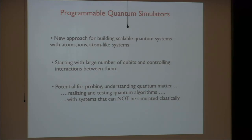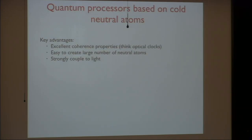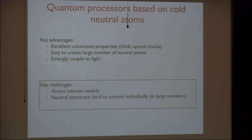What's actually most important is that we can really do it already now with system sizes which cannot be simulated classically, at least not easily. I'd like to focus on the approach involving cold neutral atoms. Those systems have been known to the community for a while. They have a number of key advantages: excellent coherence properties — think about the most advanced optical clocks — and it is also fairly easy to create a large number of neutral atoms. However, those systems have some disadvantages which so far prevented them from being really deployed in quantum information. Neutral atoms generally interact weakly, and also neutral atoms are very hard to control individually, at least in large numbers.